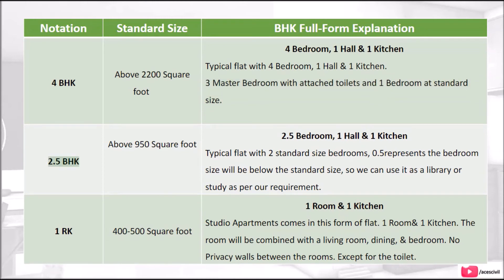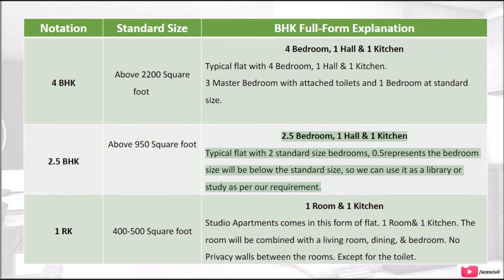2.5 BHK: above 950 square feet. 2.5 bedroom, 1 hall and 1 kitchen. A typical flat with 2 standard size bedrooms. The 0.5 represents that one bedroom size will be below the standard size, so we can use it as a library or study as per our requirement.